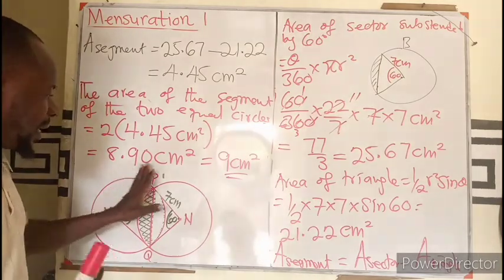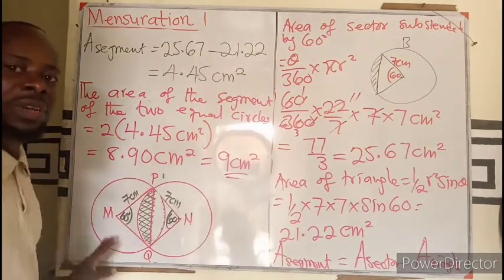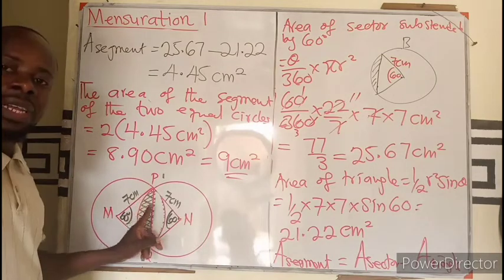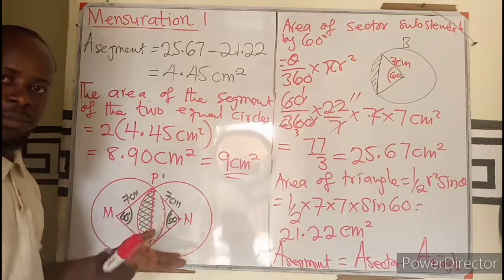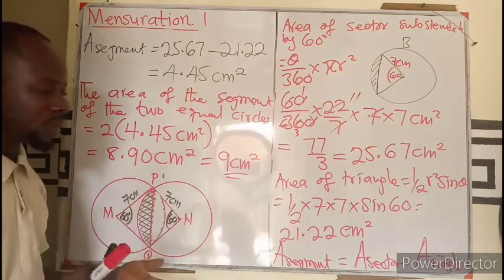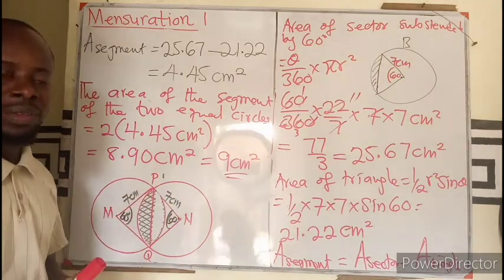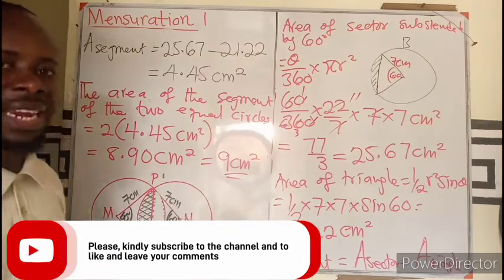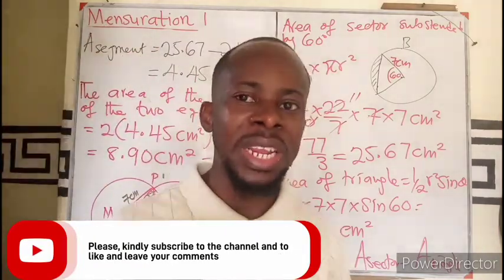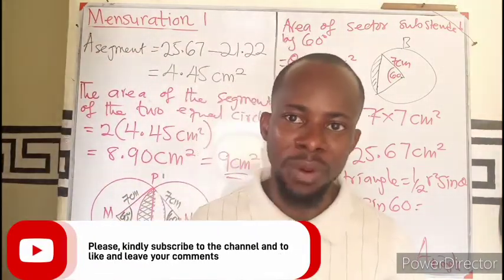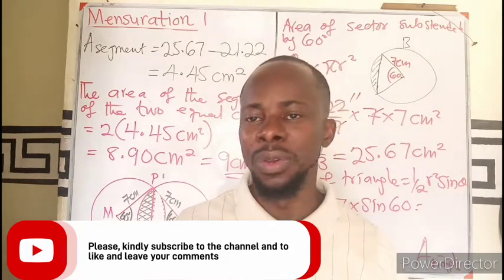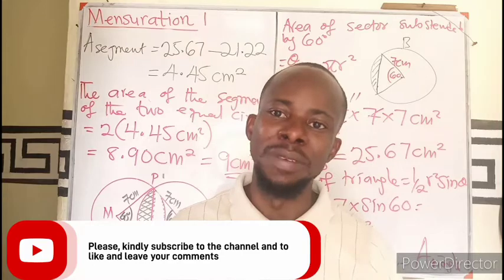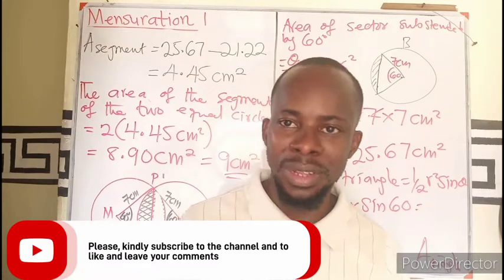This is just an overlap of two circles where the two segments overlap. Since they are the same circles, they have the same segment, so the two give us 9 cm² at the shaded region. Thank you for watching. I believe you have learned a thing or two. Feel free to share the video, like, and leave a comment for us to get interactive. Thank you.